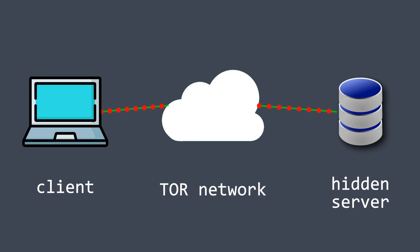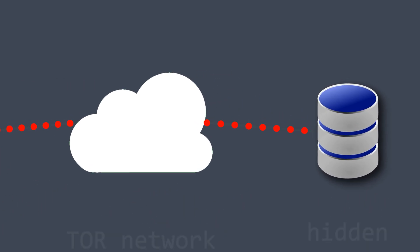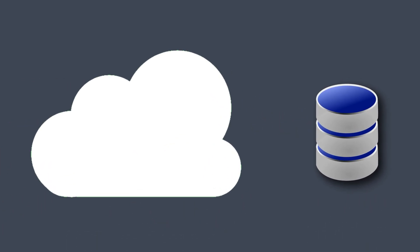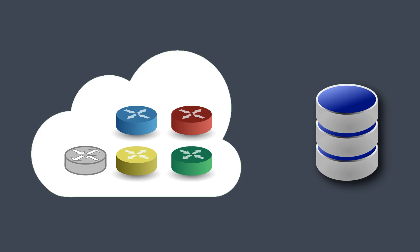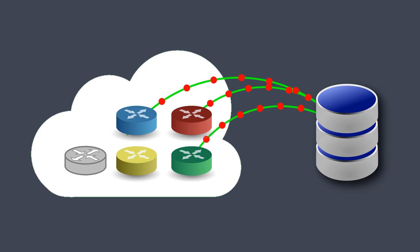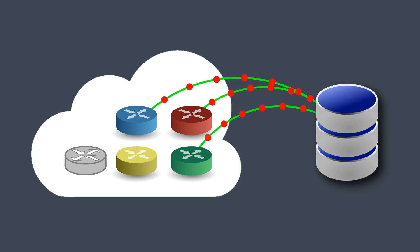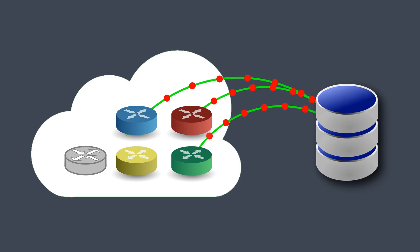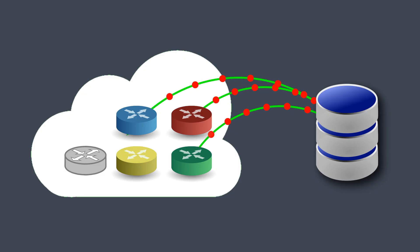The Tor network contains thousands of volunteer nodes, but for simplicity let's consider only five in this animation example. First, the server creates three random introduction points within the Tor network using typical Tor circuits — basically saying 'hey, if anyone wants to reach me, you can reach me from here.' Then the server needs to advertise itself on the network.